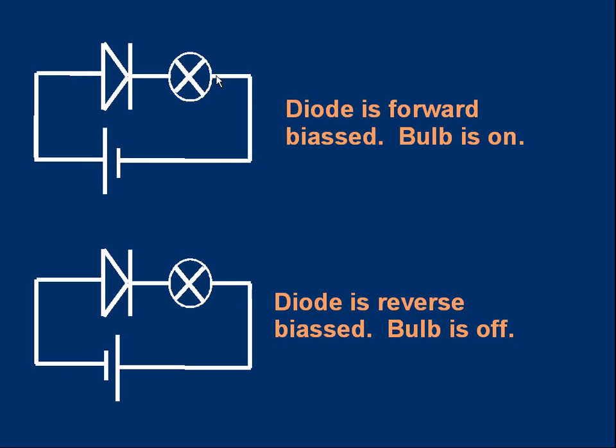Suppose we reverse the polarity of the supply, we turn the cell the other way around. Now the conventional current wants to go anti-clockwise, but the diode is pointing in the opposite direction. The diode will prevent any current flowing around. In this arrangement the diode is said to be reverse biased and the bulb won't light up.